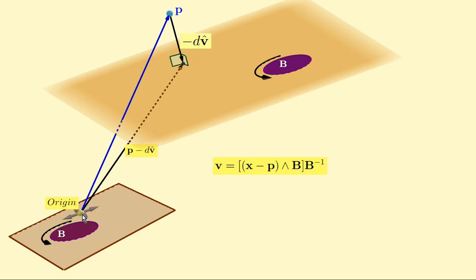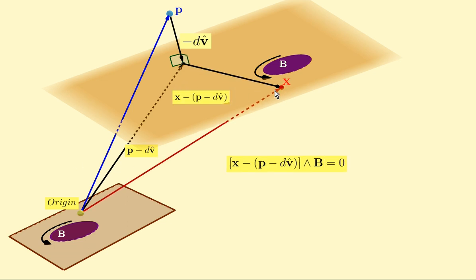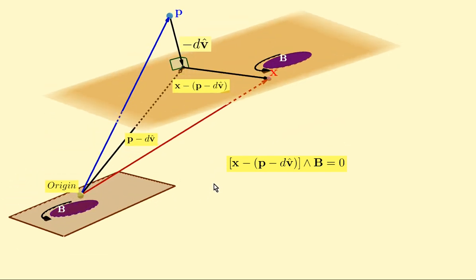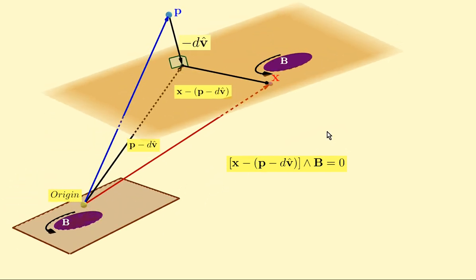So now we have a vector P minus DV to a point within the plane. And now we'll just use our previous solution. So for any point within the plane here, the vector X minus P minus DV is parallel to the bivector. And therefore, as we see here, X minus P minus DV wedged with B gives zero.